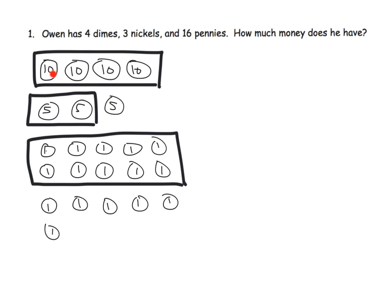We could say there's 10, 20, 30, 40. And then these two together make 50. And then here's 10 — that makes 60. Plus here's five — that makes 65. And then we can count the ones: 66, 67, 68, 69, 70, 71. So we get 71 cents.